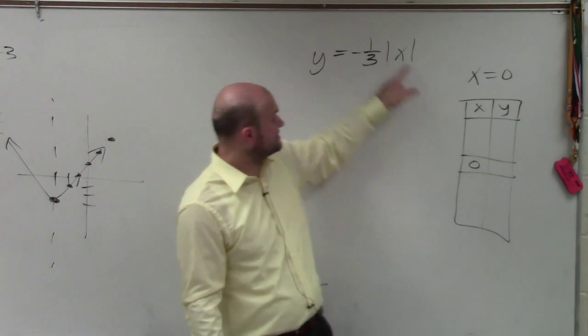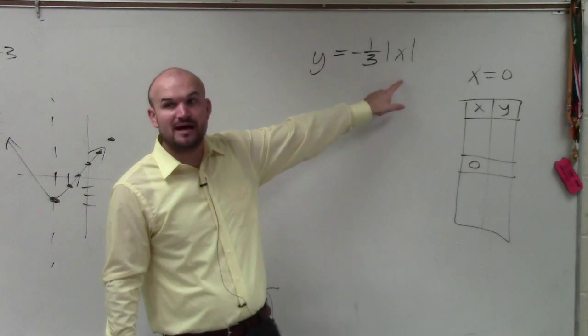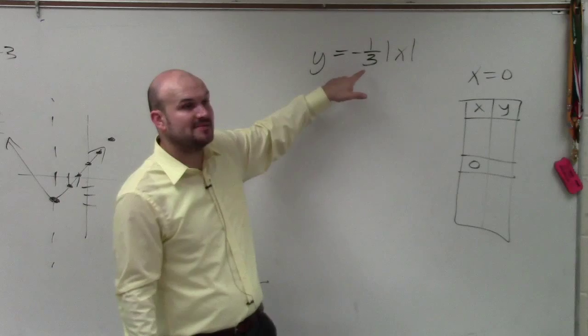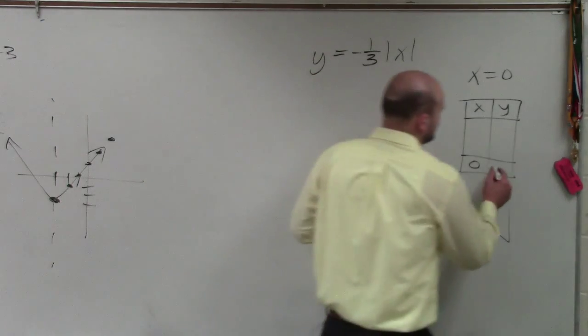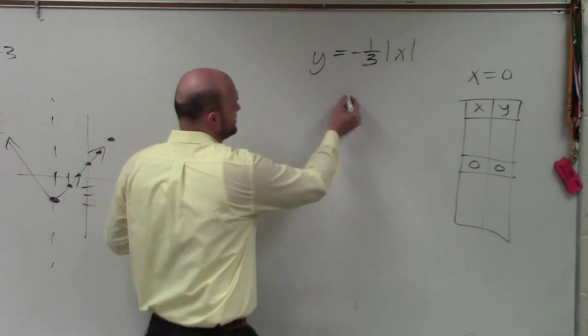Now, to find the point, you take x and you plug it in for x, or you take the value, plug it in for x. Well, absolute value of 0 is 0. 0 times negative 1 third is 0. Now, here it kind of comes into a fun part.